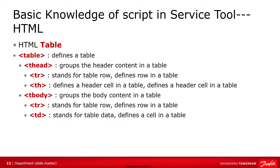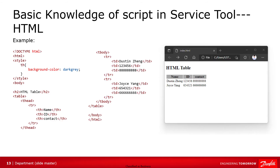You can define a table in an HTML page using the table tag. You can use the tags thead and tbody to define a table header and a table body. The tag tr stands for table row, and is used to define a row in a table. The tag td stands for table data, and is used to define a cell. The tag th is used to define a cell in the table header. In this example, in the table header, we use the th tag to define three cells and give them content: name, id, and contact. In the table body, we use the tag tr to define two rows and use the tag td to define three cells in each row.